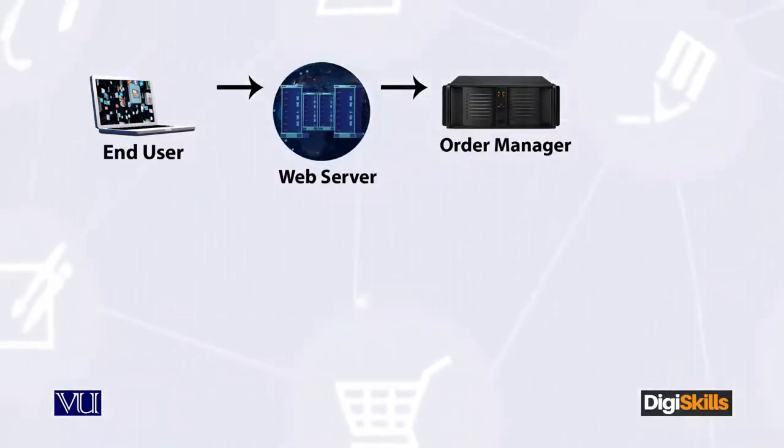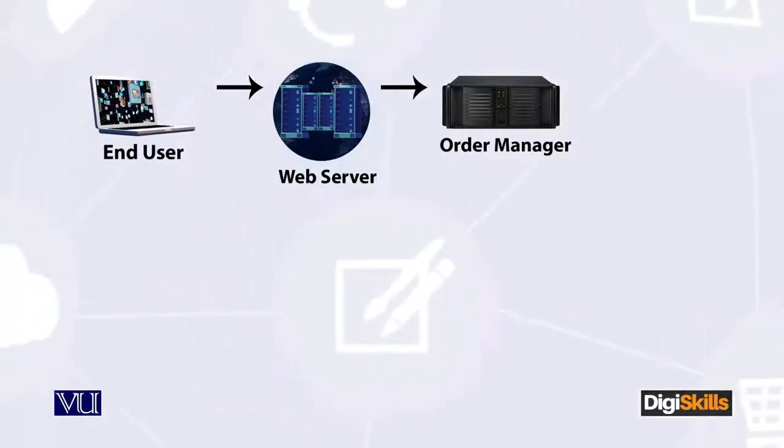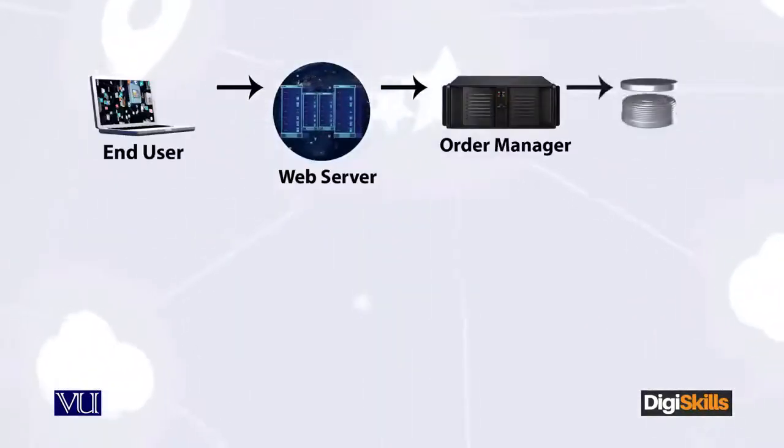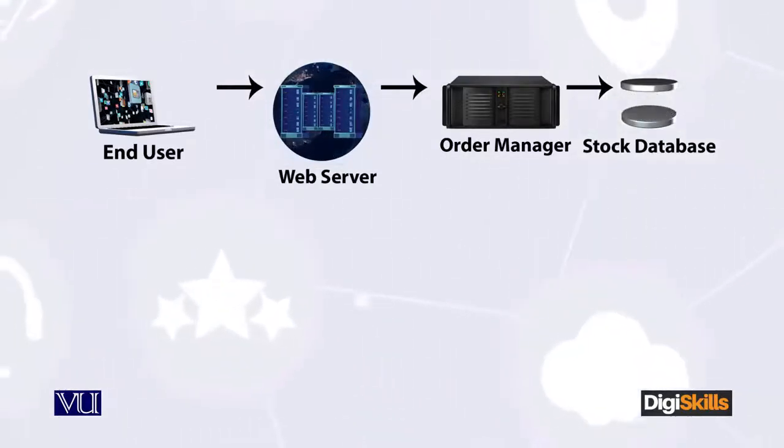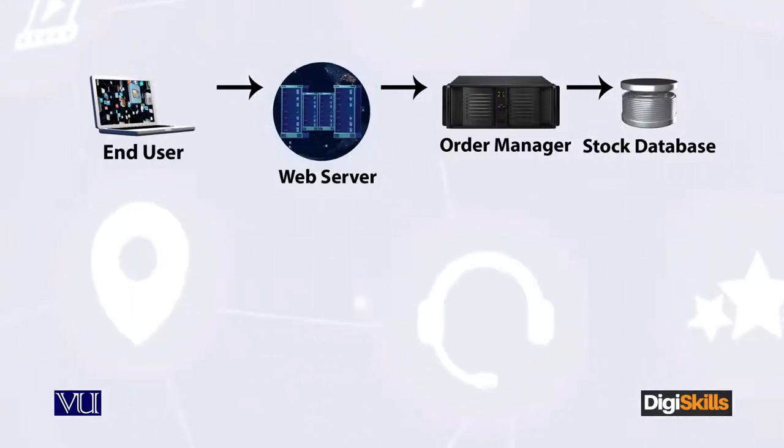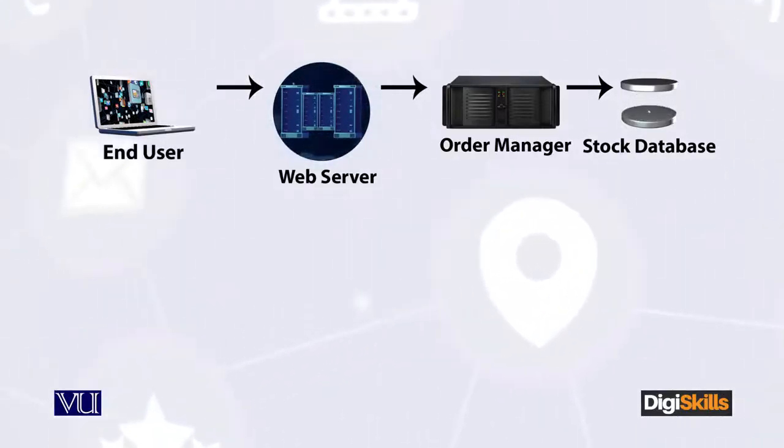Now the order manager, in the first step, checks the stock. For example, if I have ordered 10 mobile phones, the order manager checks the stock database. The stock database seems to be on the internet, but actually the physical mobile phones are in a physical warehouse. As a consumer it seems the product is online, but the internet is a virtual thing — there is a lot of activity going on on the ground, just like a physical store.